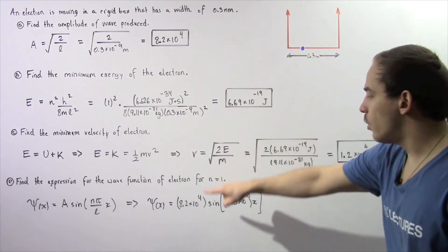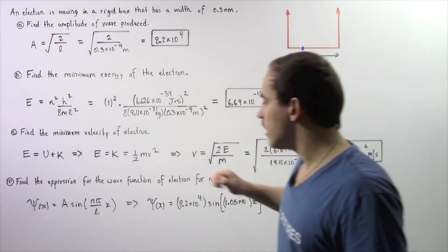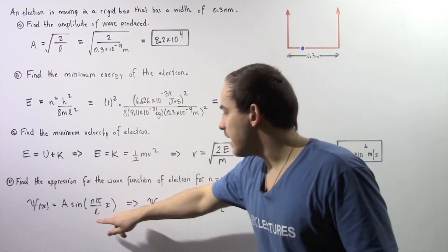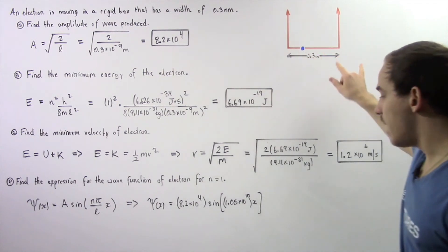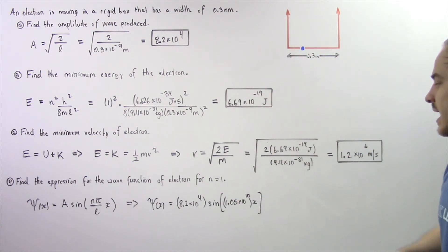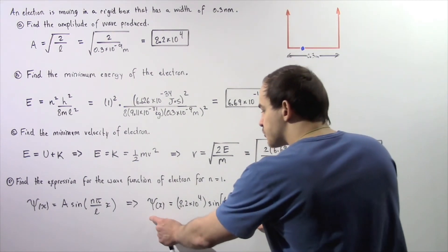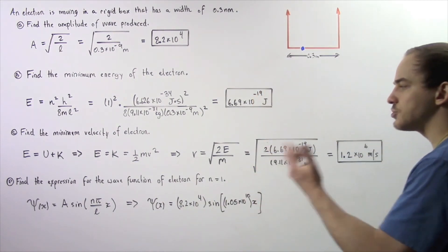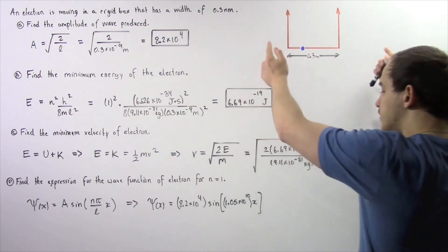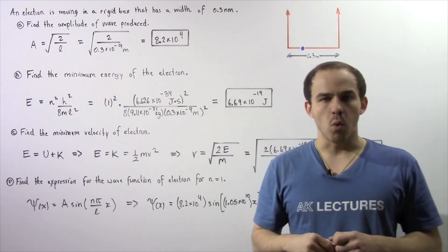So A equals 8.2 times 10 to the 4, multiplied by the sine of — with n equal to 1 — 1 times pi divided by the width of our box, giving a value of about 1.05 times 10 to the 10, multiplied by x. This represents the equation for the wave function for our electron moving inside the rigid box with quantum number n equals 1.